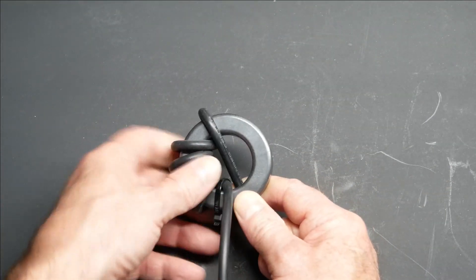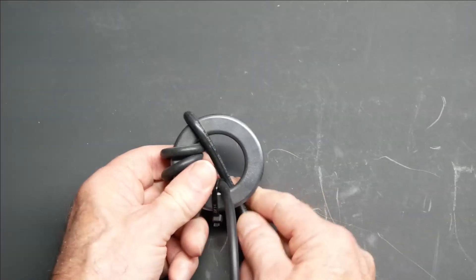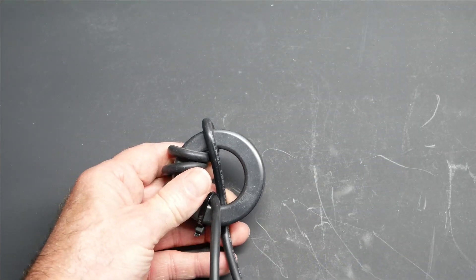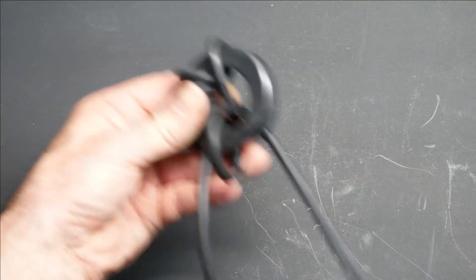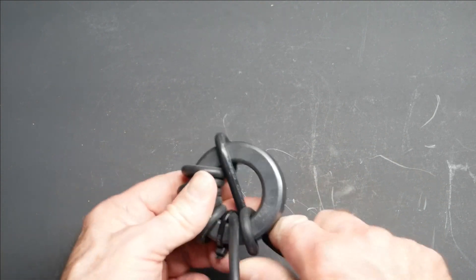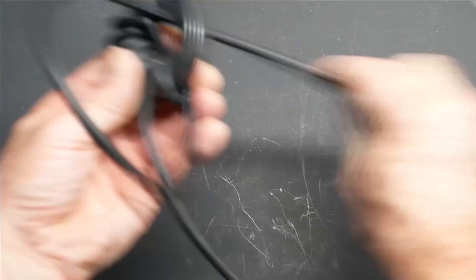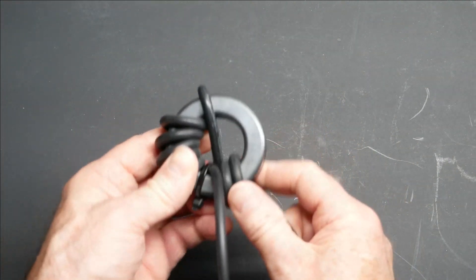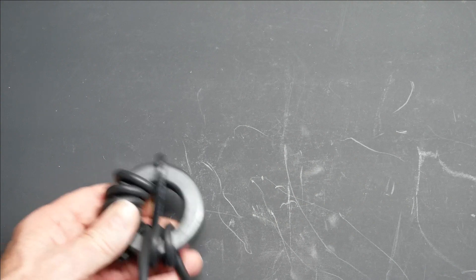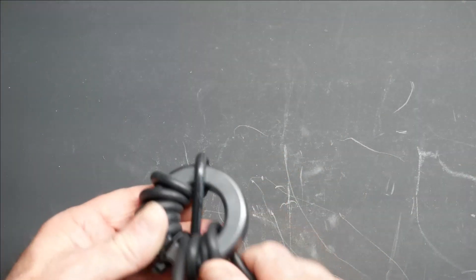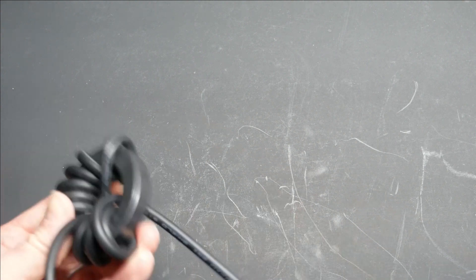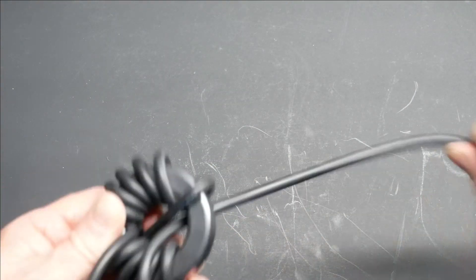This last turn, you count that as a turn because it's going through the center, but it's the first turn of our clockwise winding. So we have one, two, three, and four, five, and last but not least six.